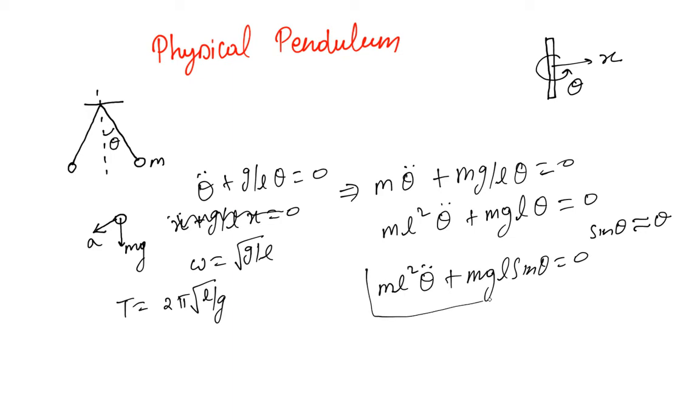We have just sort of multiplied it by mass m and length l. What is this equation telling?